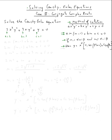So let me write it: am(m-1) + bm + c = 0 means 2m(m-1) + 3m + 1 = 0.